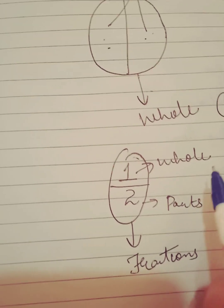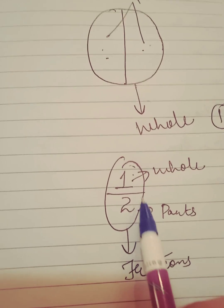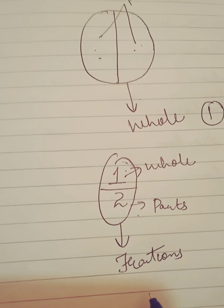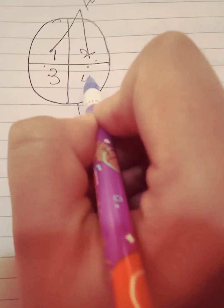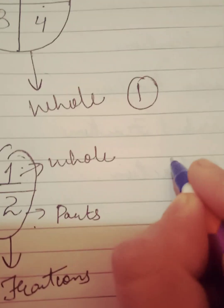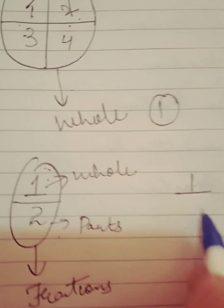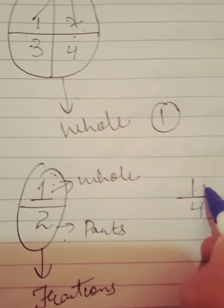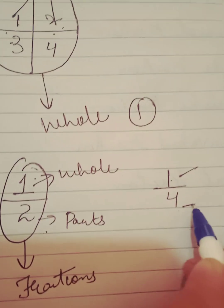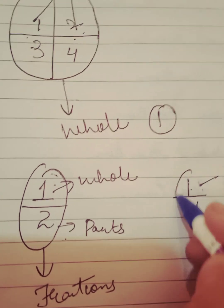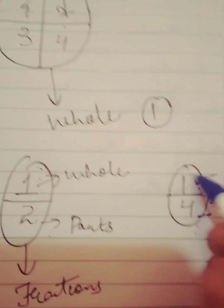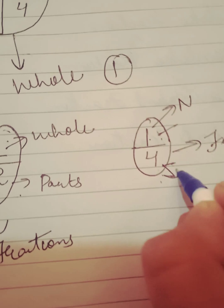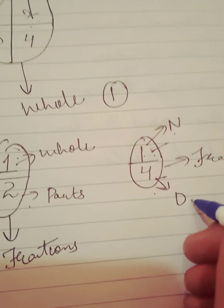Now, what is a fraction? Parts of a whole — when we divide the whole, we call those parts fractions. For example, if we call this roti 1, and cut it into 1, 2, 3, 4 parts — the whole was 1, and it was divided into 4 parts. In a fraction, there is a numerator and a denominator.